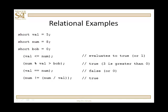What about num mod val? Well, num is 8 and val is 5. So, how many times does 5 go into 8? One time, the remainder is 3. So, is 3 greater than bob? Bob is 0. The answer is true, 3 is greater than 0.